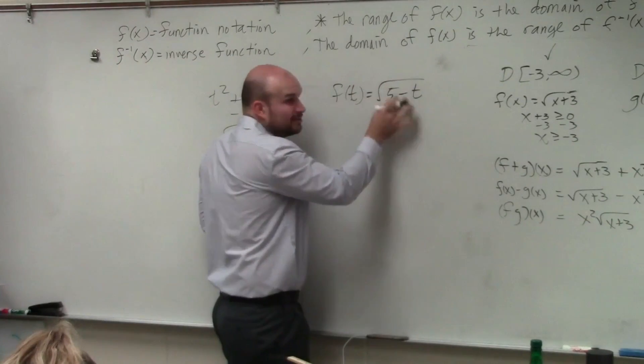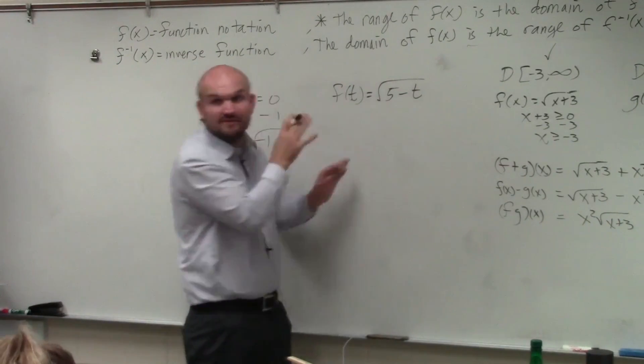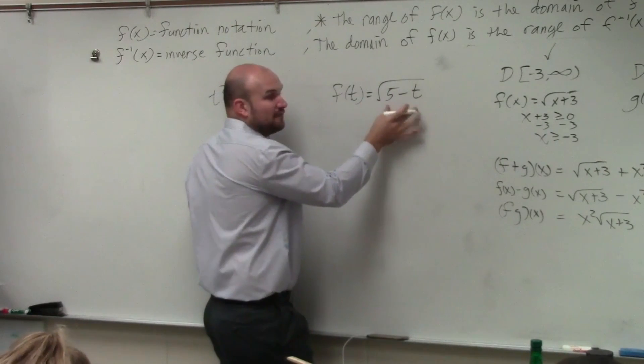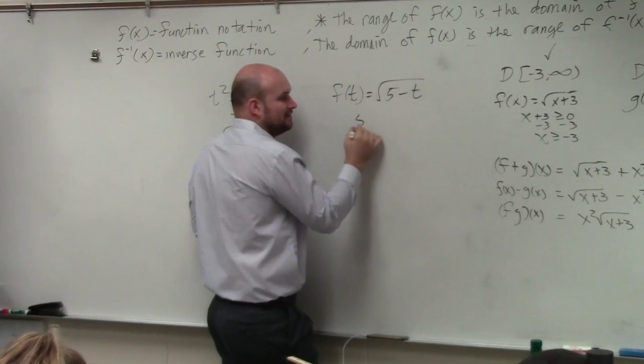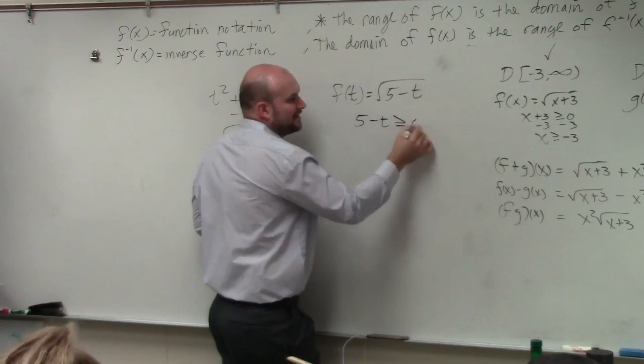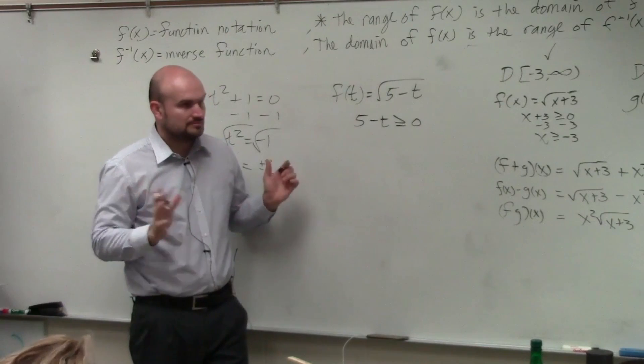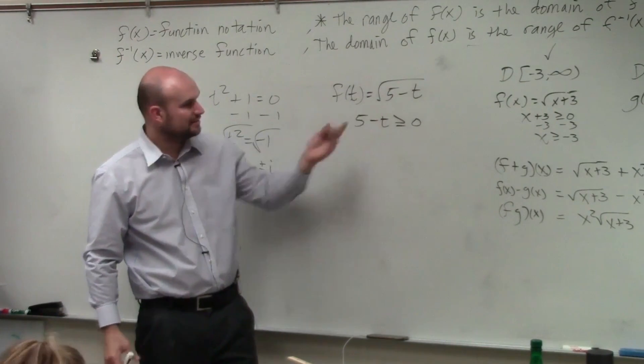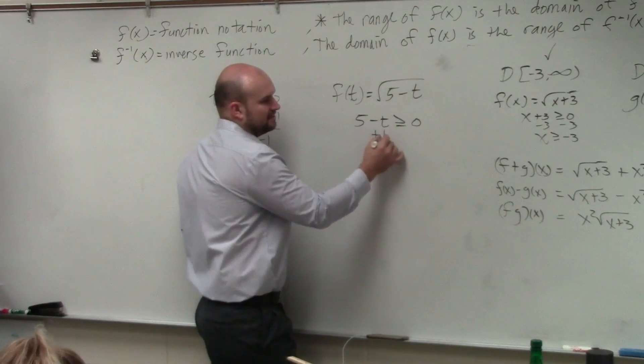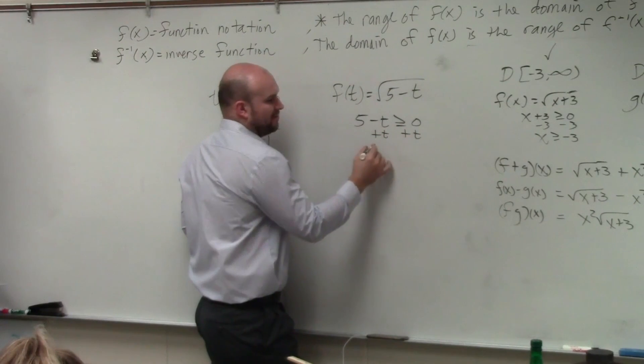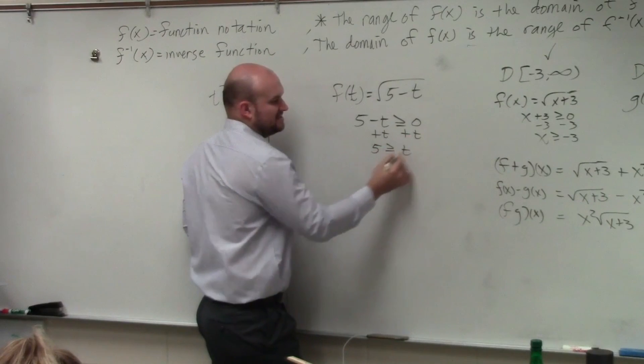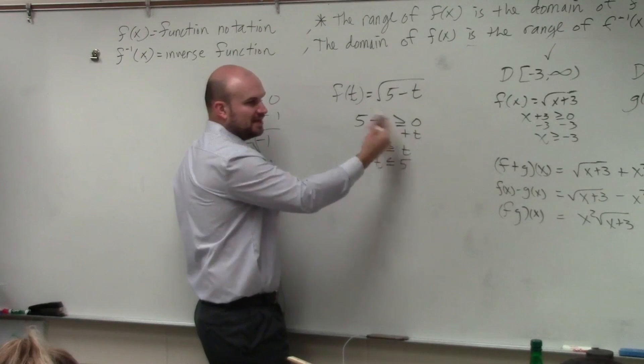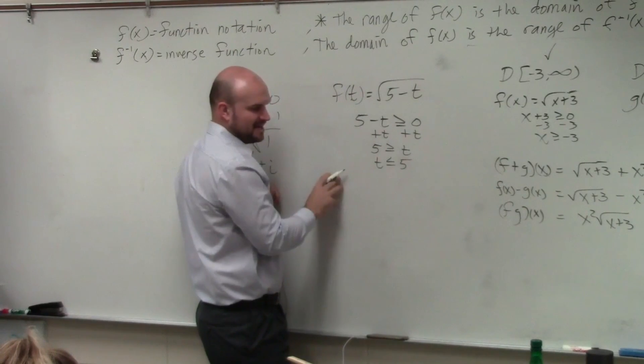But you see, I have a square root. I cannot take the square root of a negative number. Everybody agrees with that, right? So therefore, all the numbers on the side of this radical has to be greater than or equal to 0. Has to. You can't take the square root of a negative number. So everything under here has to be greater than or equal to 0. So, you can just solve for t. Add t. So therefore, 5 is greater than or equal to t. Or you could say t is less than or equal to 5. You could also subtract 5, divide by negative 1, and flip the sign. You'd get the exact same answer.